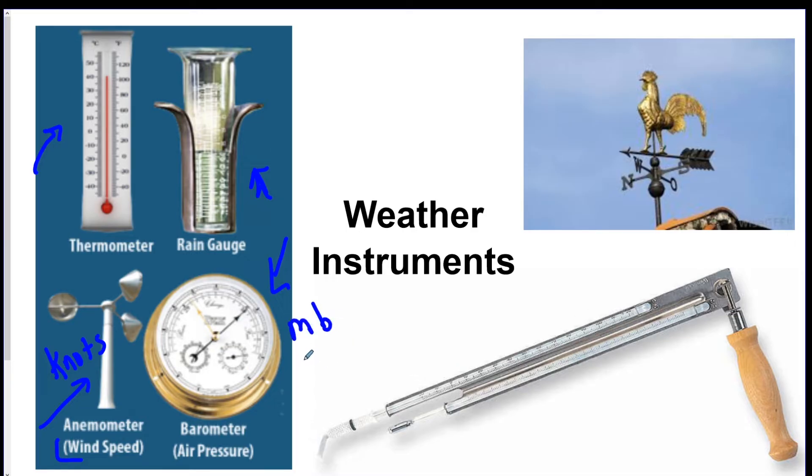This is a barometer. This one's a modern barometer. It measures in millibars. And there's also an old mercury barometer that measures in inches of mercury. Mercury is HG on the periodic table.